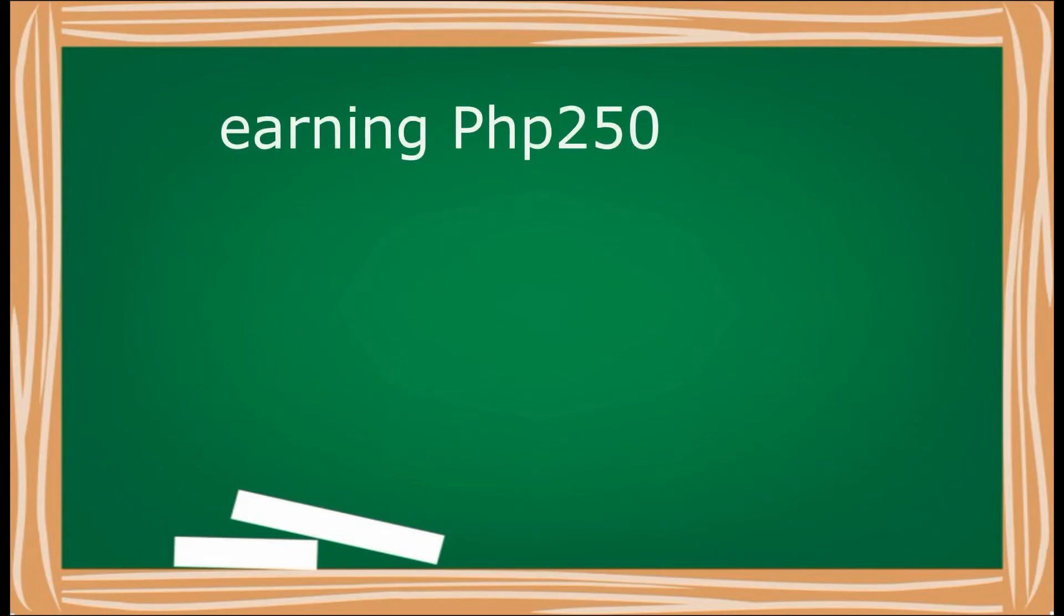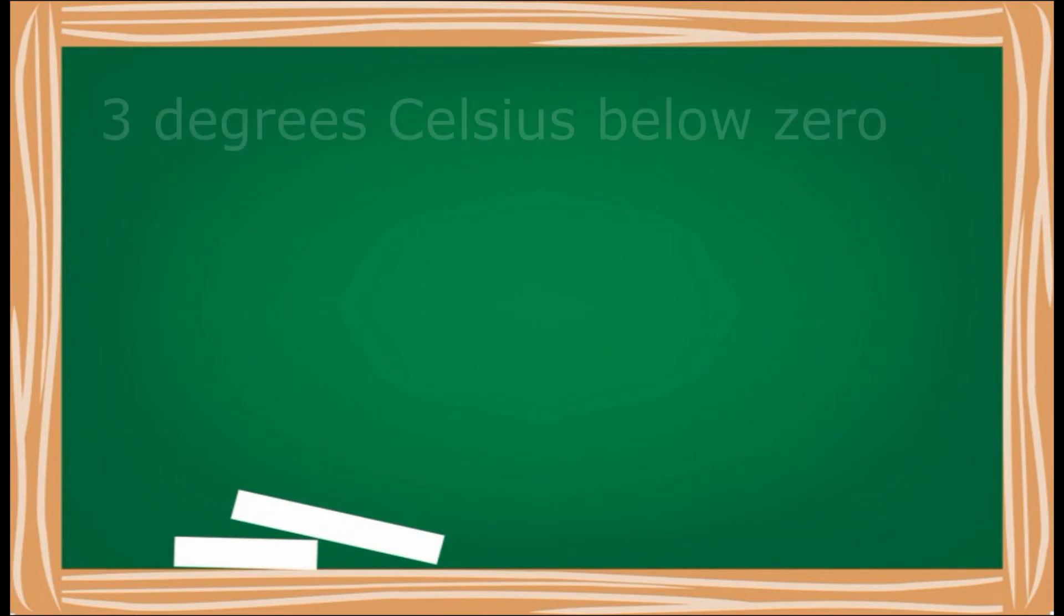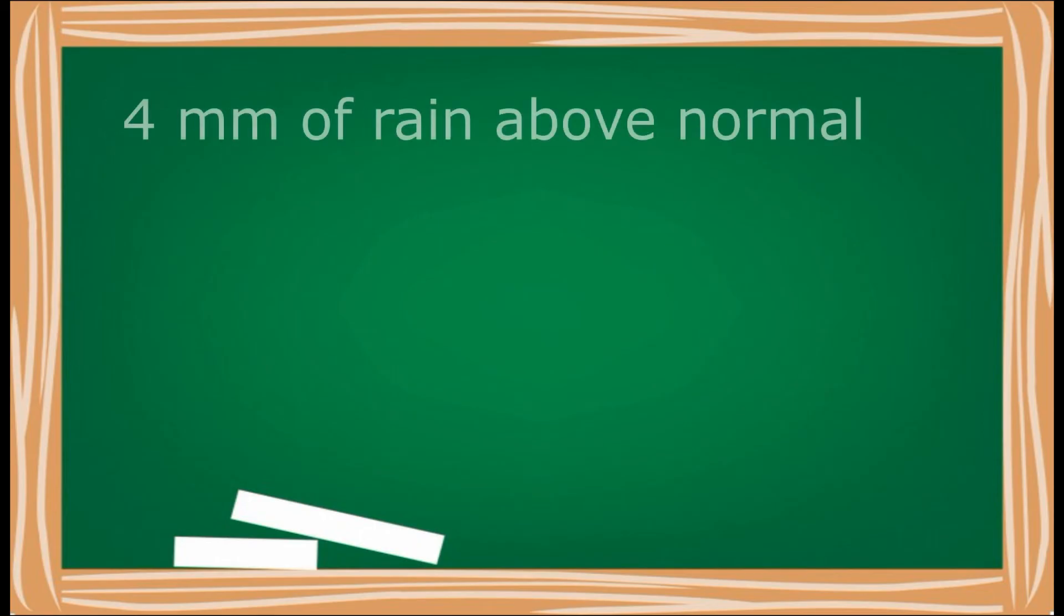Earning 250 pesos can be written as an integer, positive 250. Three degrees Celsius below zero can be written as an integer, negative 3.